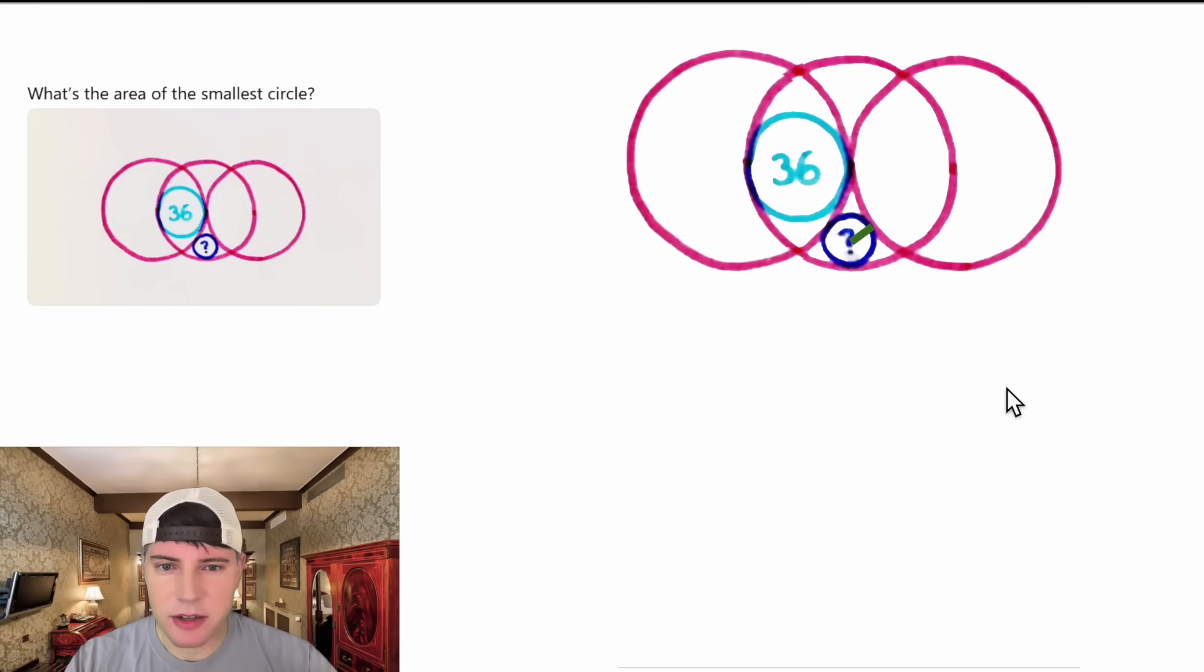Let's draw the radius of the smallest circle, the question mark circle, and let's call it x. The radius of the smaller circle is equal to x. So the question wants to know, what is the area of the smallest circle? We want to know, what is pi x squared? This is what we're looking for. Let's put a box around it and highlight it yellow.